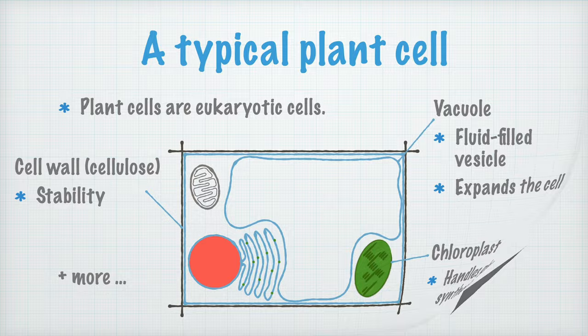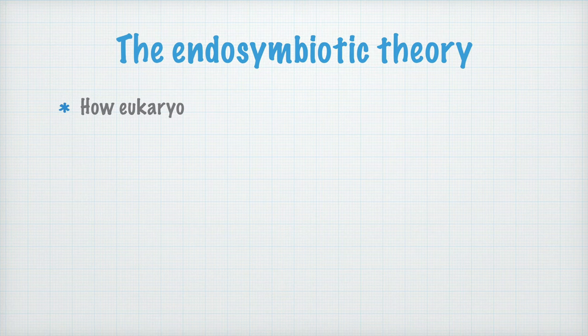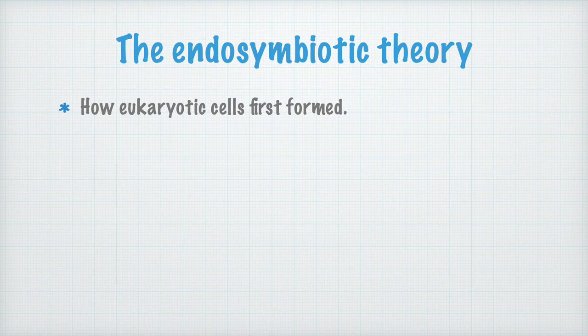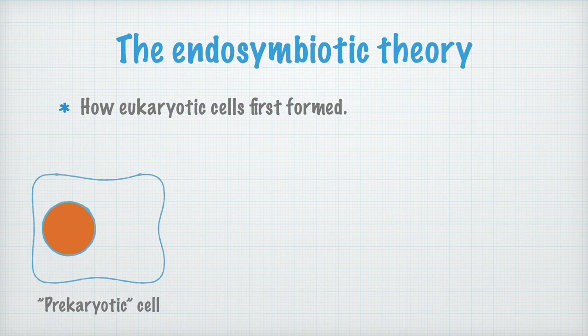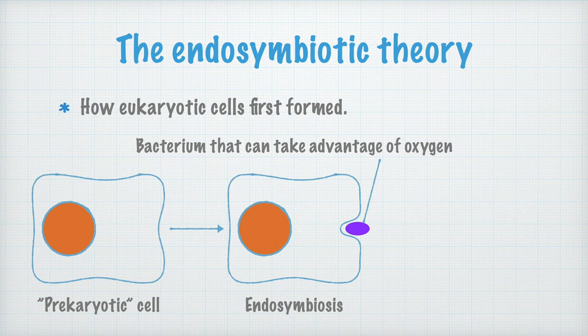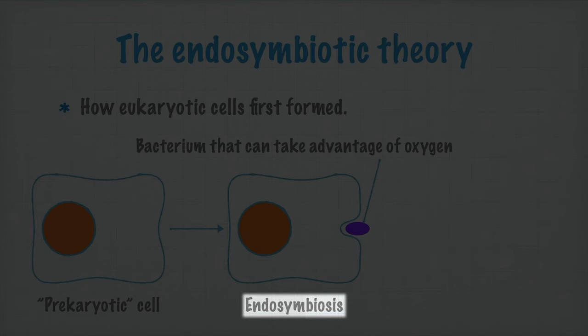Now let's turn our attention to something called the endosymbiotic theory. This theory describes how the first eukaryotic cells formed. Once upon a time, many many million years ago, there were no eukaryotic cells. But there was a kind of cell I here call a pre-karyotic cell — a cell before the eukaryotic cells. Today we believe this was some kind of archaeon, or at least a cell related to the archaea. One day, this pre-karyotic cell decided to engulf a bacterium which could use oxygen to combust glucose. Instead of digesting the bacterium, the bacterium started to live inside the cell — this became an endosymbiosis: 'endo' for inside of, 'sym' for together, and 'biosis' for life — a life together inside the cell.